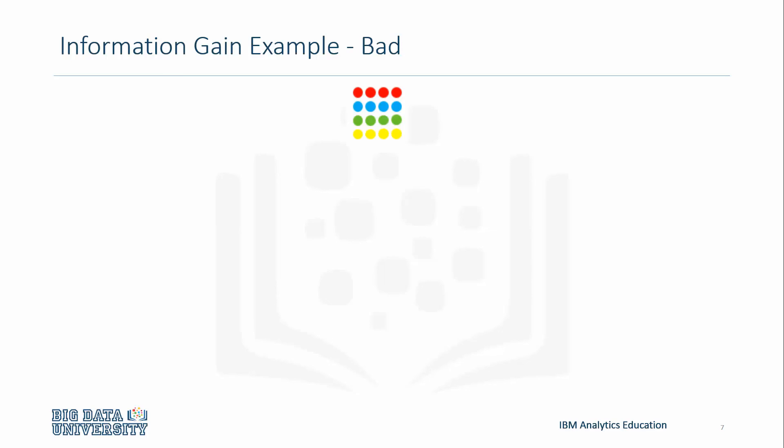We'll still be using the same dataset as before, which consists of four data points of four colors, as well as the histogram. Take a couple of seconds to look at the split now. How do you think this split differs from the previous example? We can see that a split like this provides zero information gain,